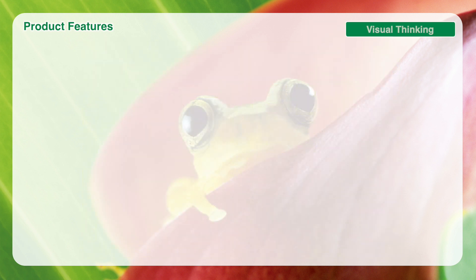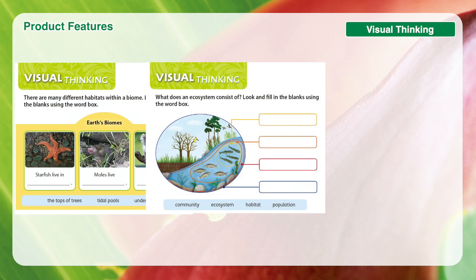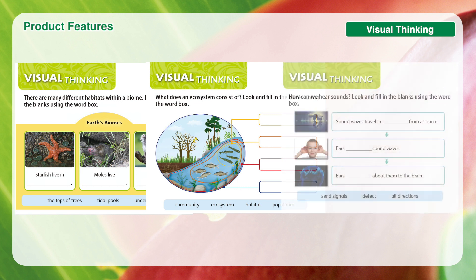Students can improve their critical thinking skills by visually organizing their ideas through graphic organizers, such as diagrams and tables.